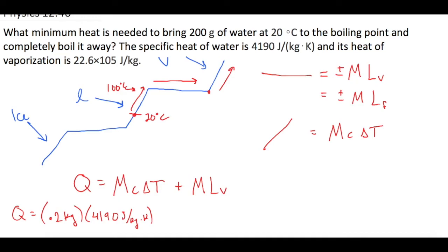And then we want to times that by the change in temperature. So we are going to do final minus initial. So we're going to end up at 100 minus the initial of 20. So we will have 80 degrees Celsius or 80 Kelvin.